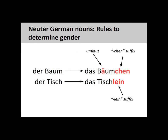All diminutive constructions will be neuter. Nouns in their diminutive form indicate a smaller version of something, or communicate informality, cuteness, or affection. To turn a noun into its diminutive form, you add the suffix -chen or -lein to the noun, and, if possible, add an umlaut to the noun vowel.